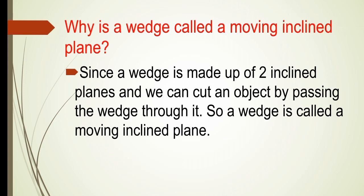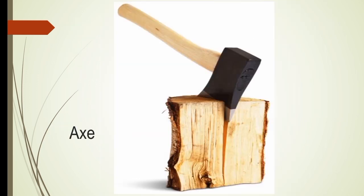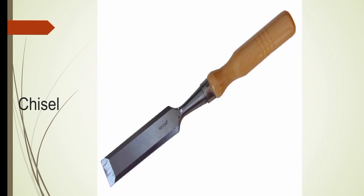Why is a wedge called a moving inclined plane? Since a wedge is made up of two inclined planes and we can cut an object by passing the wedge through it, a wedge is called a moving inclined plane. Note down this question — it is very important from an examination point of view. Examples are knife, axe, shovel, and chisel. All these are examples of a wedge.